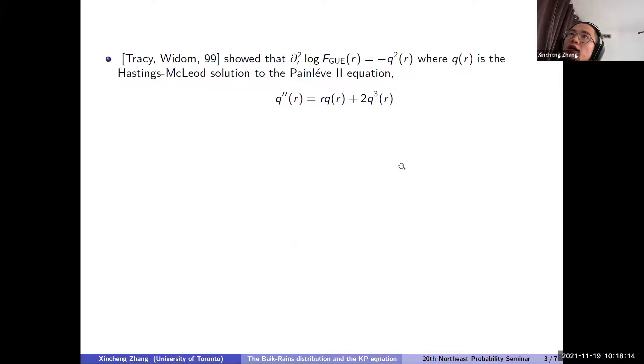So in 1999, Tracy and Widom showed that the second partial in R of the log of the F-GUE distribution is equal to minus Q squared. So here, the function Q is the Hastings-McLeod solution to the Painlevé II equation.